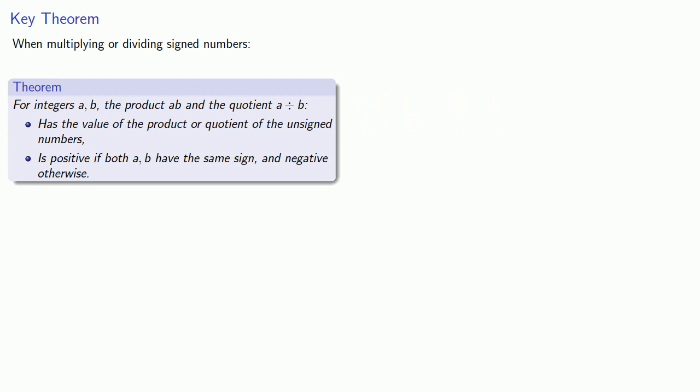In other words, ignore the sign and then find the product or quotient as normal, then take care of the sign at the end because the sign is positive if both a and b have the same sign and negative otherwise.